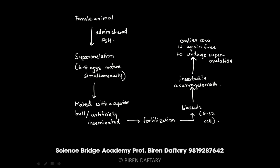Once the blastula is transferred, the earlier cow is again free to undergo super ovulation, and this process continues. One cow is always used for super ovulation, while another serves as the surrogate mother — carrying and giving birth to the developing embryo. This entire process is called Multiple Ovulation Embryo Transfer. If asked in an exam, drawing a flowchart like this makes it much easier to demonstrate understanding.